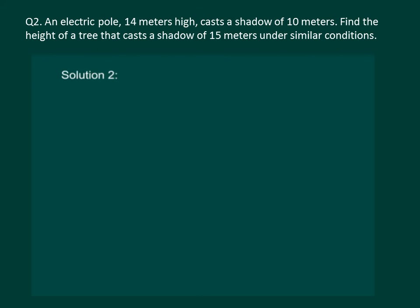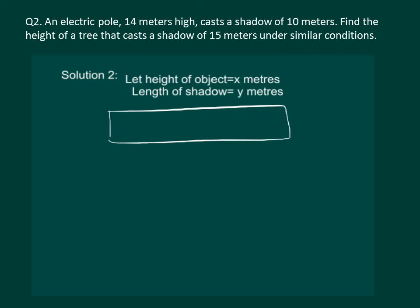Firstly let us denote height of the object as x and length of the shadow by y. Now we are in a position to construct a table for x and y. We know that when the height of the pole is 14 meters the length of the shadow is 10 meters. And we have to find the height of the tree when the length of the shadow is 15 meters. Or we can say that we have to find x2 when y2 is given.